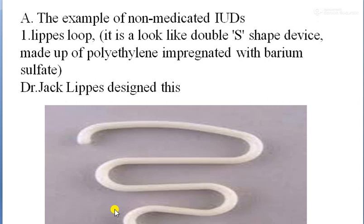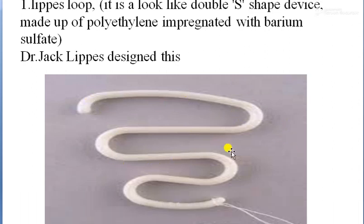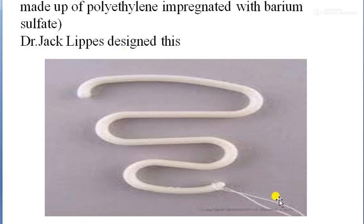Another reason for this name is that it was designed by Dr. Jack Lippes, and according to his name this device is known as the Lippes loop. It has a double-S shepherd design and is made of polyethylene impregnated with barium sulfate.